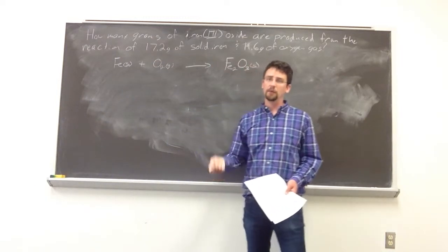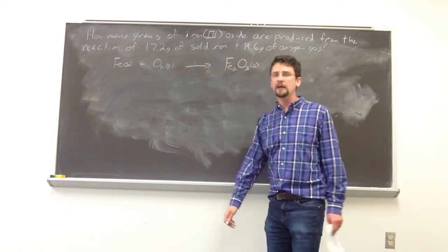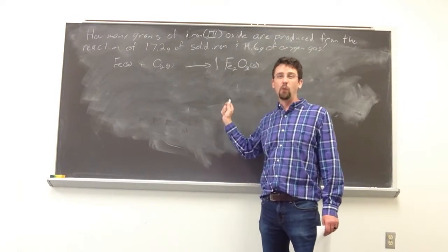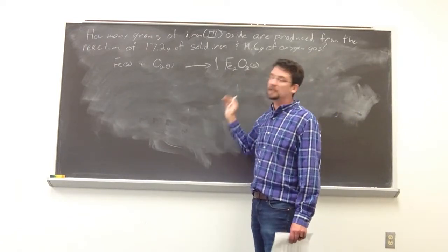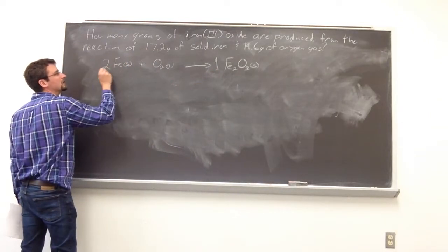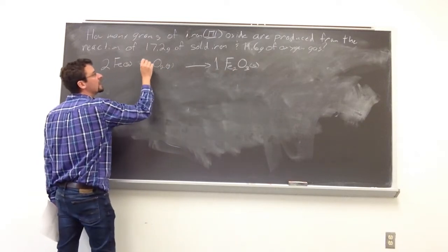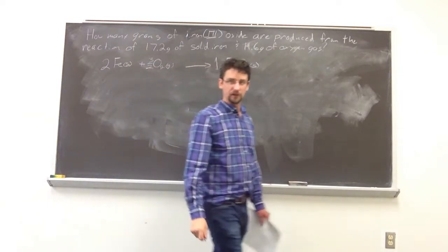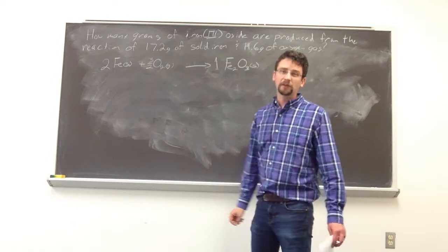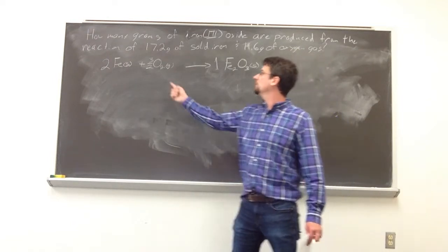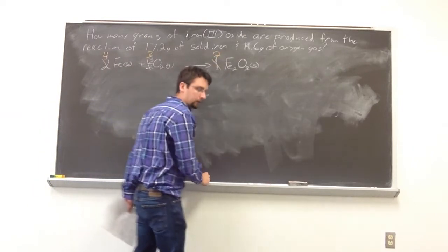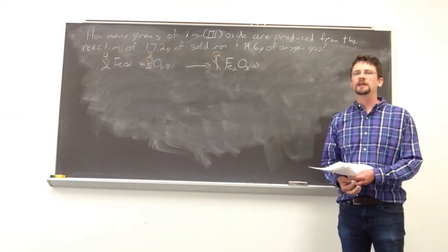To balance the equation, I look at the most complicated molecule and place a 1 in front of it, then balance other atoms that appear once on each side. Balancing irons: a coefficient of 1 in front of Fe2O3 requires a 2 in front of Fe, giving 2 irons on both sides. For oxygens, we need 3/2 in front of O2. Since we don't want fractions, we multiply everything by 2: giving 4 Fe + 3 O2 → 2 Fe2O3.